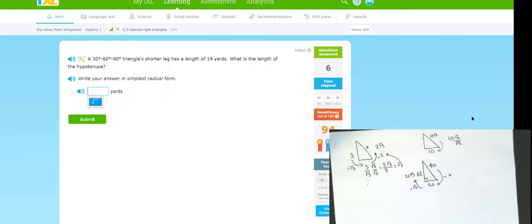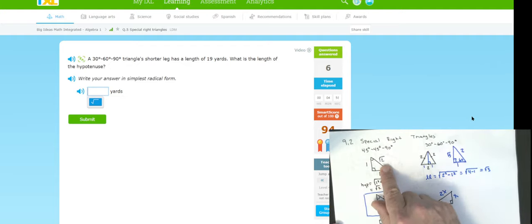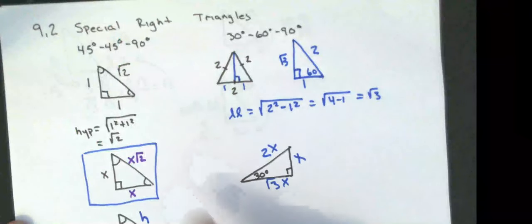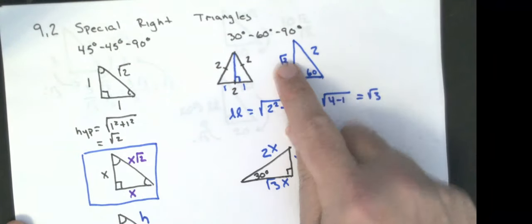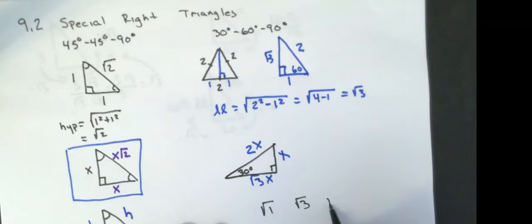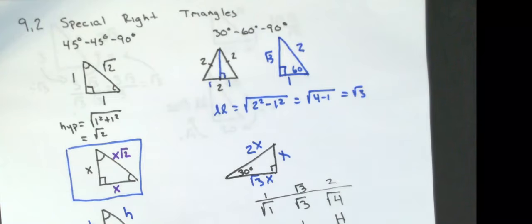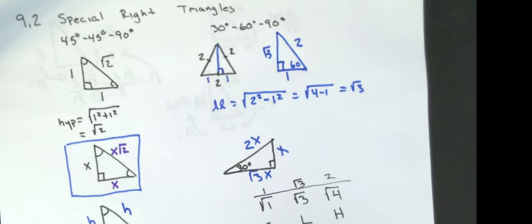That should be enough to get you through special right triangles. Those numbers you're going to want to memorize: one, one, square root of two for the 45-45-90; and one, two, square root of three for the 30-60-90. To clarify the 30-60-90: the sides in numerical order are one, square root of three, and two — where one is the short side, square root of three is the long leg, and two is the hypotenuse.